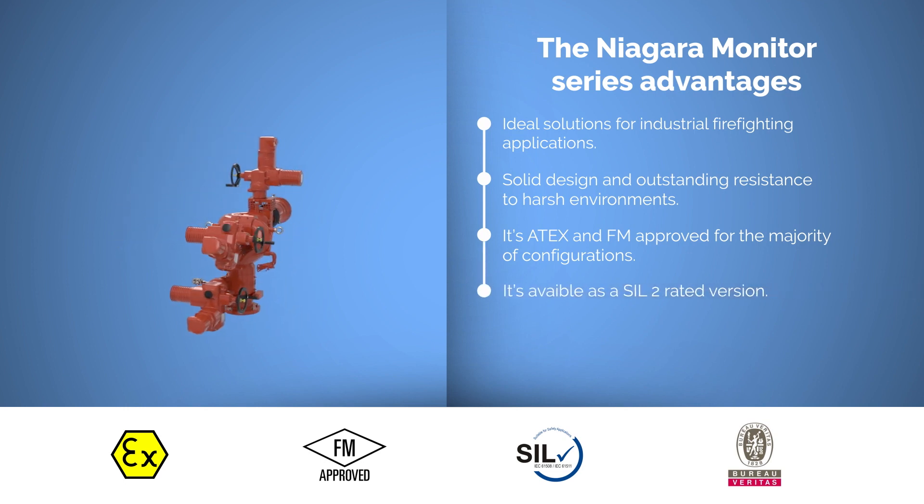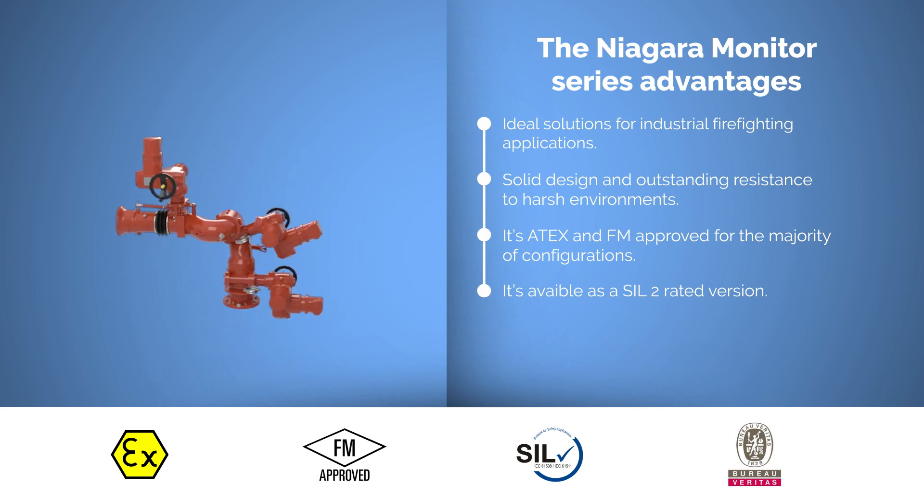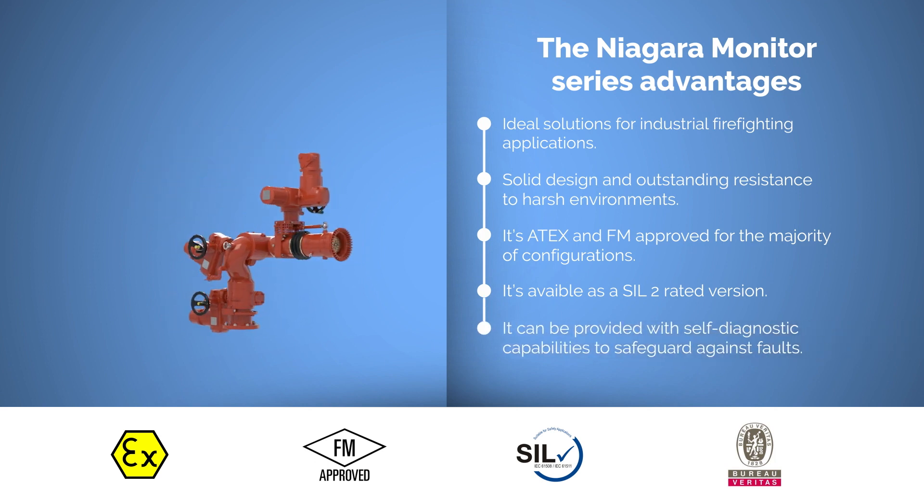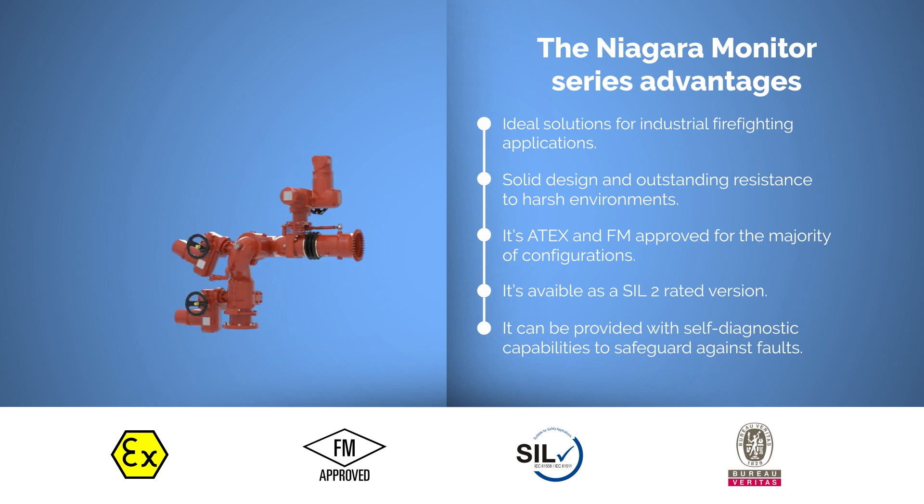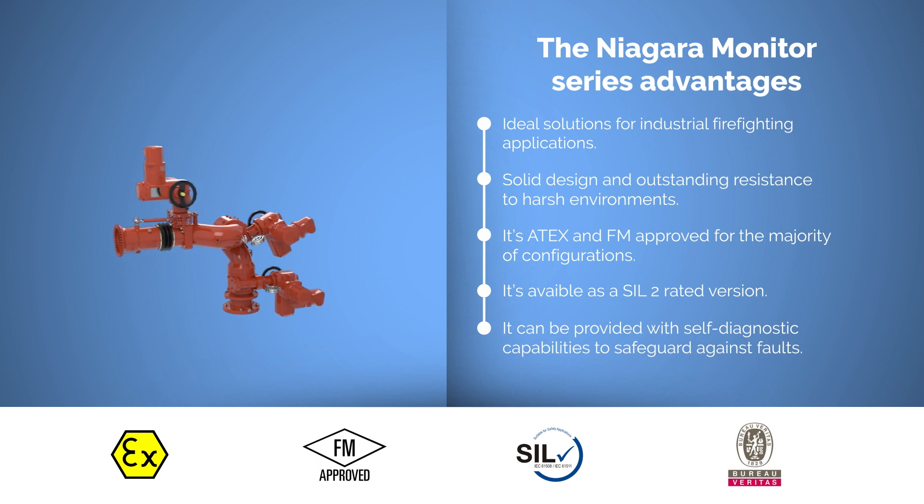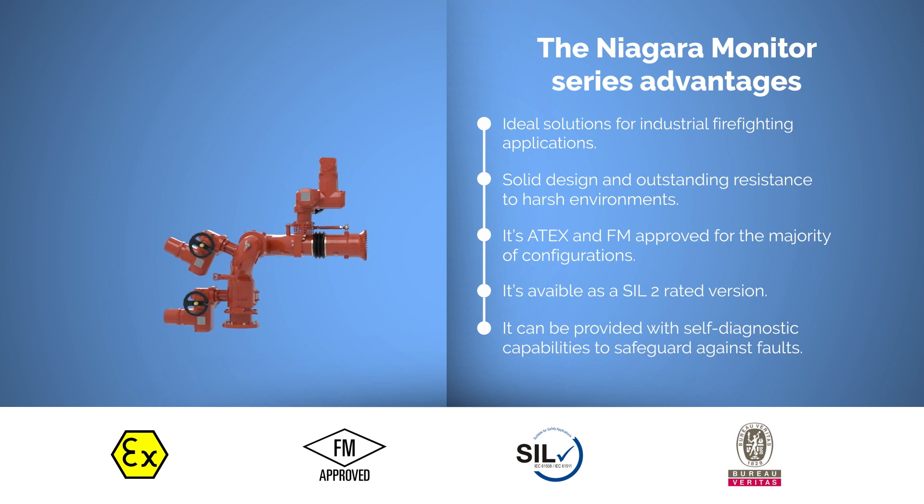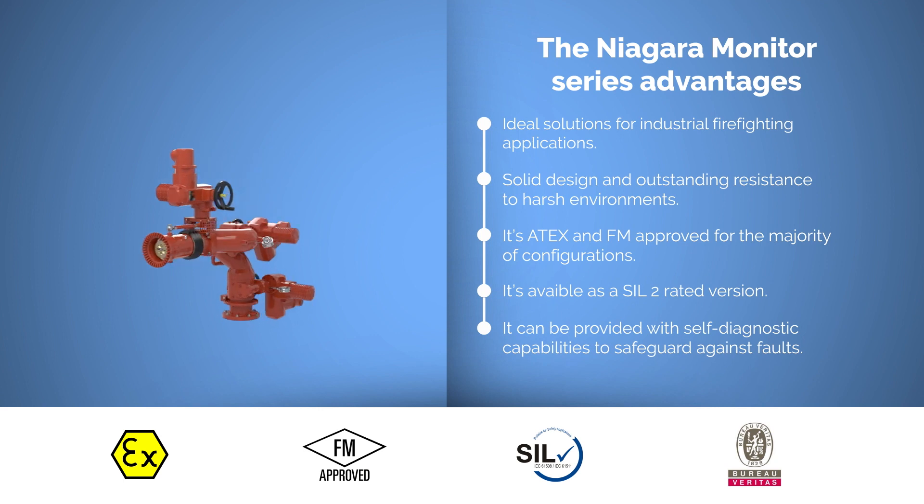The electric Niagara model is also available as a SIL 2 rated version which is certified by Bureau Veritas and can be provided with self-diagnostic capabilities to safeguard against faults which may prevent movement or water being released from the monitor. This feature allows failures to be resolved in a safe mode rather than in fire conditions while providing increased reliability of the overall system to ensure that the firefighting monitor functions as intended when called into action.